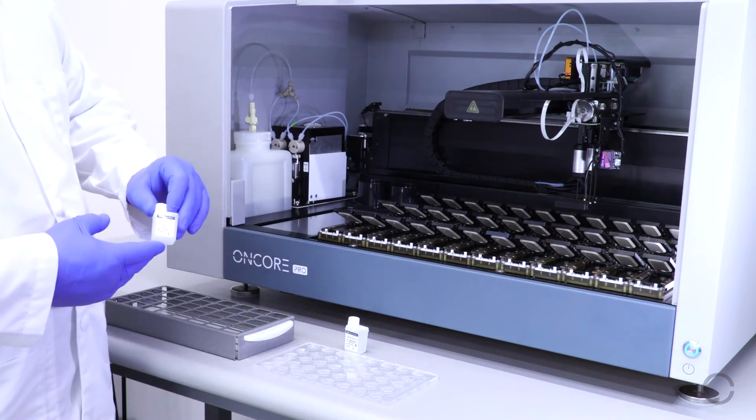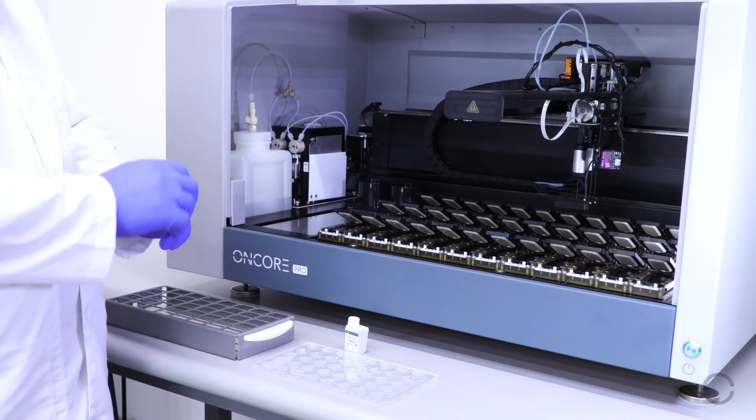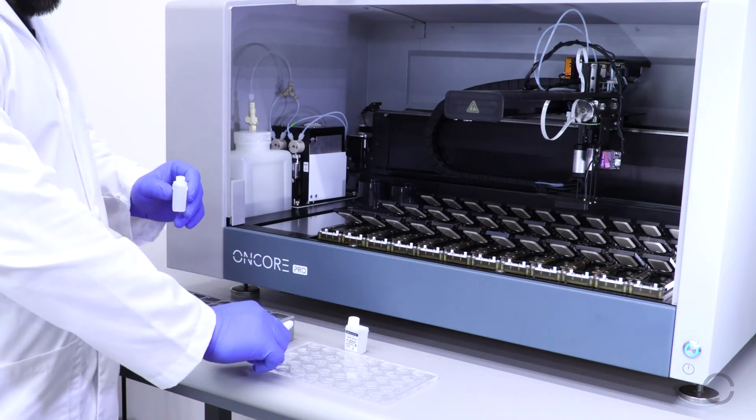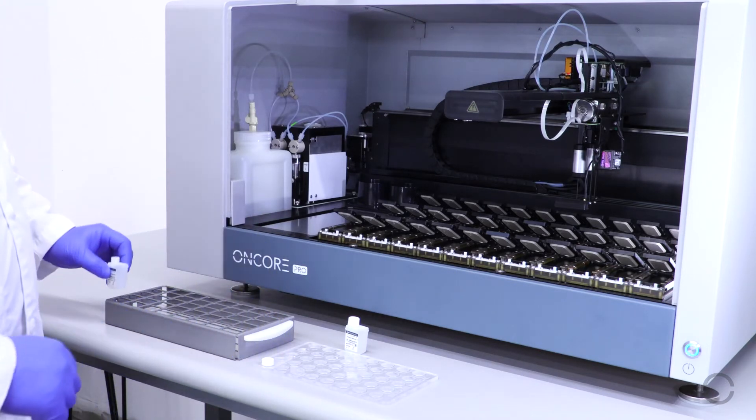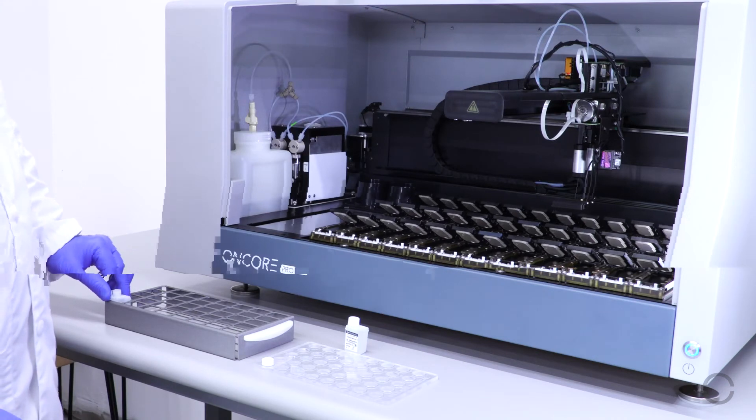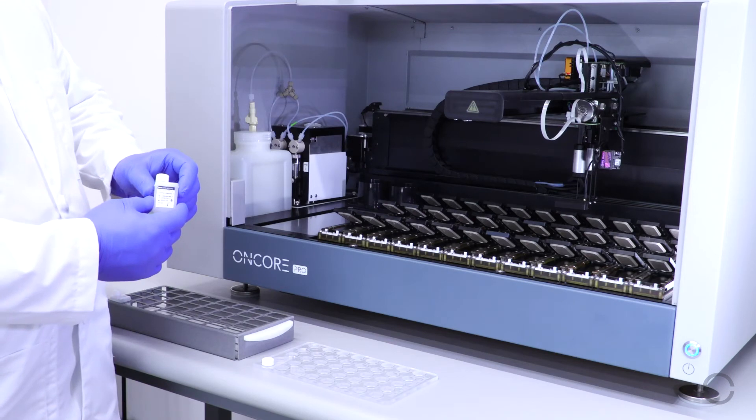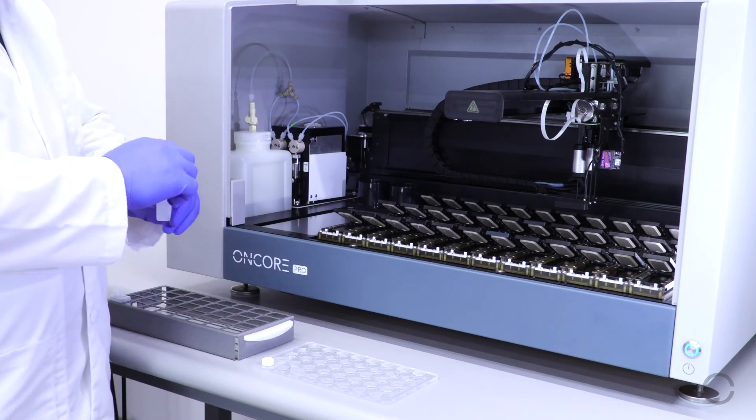Next, take tubing cleaning reagent 2 and load it into position 5 in the reagent tray.